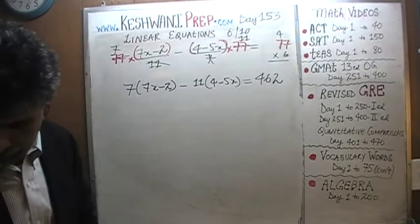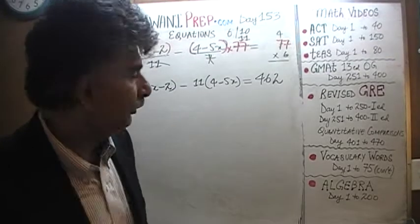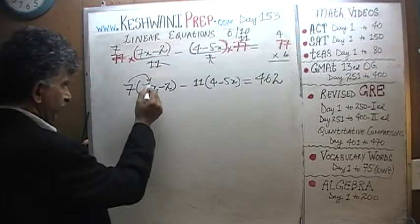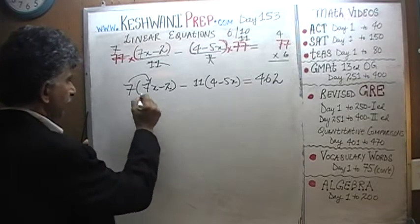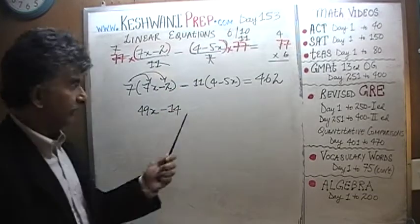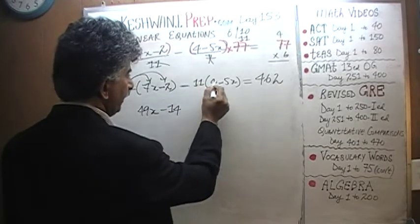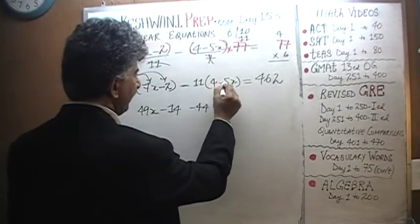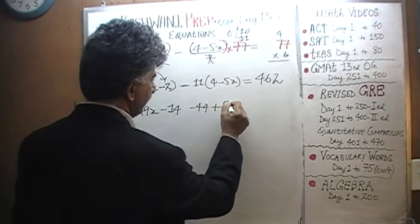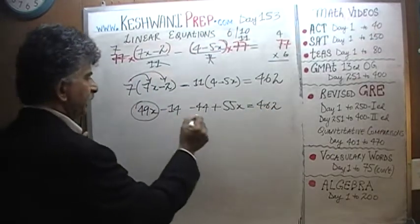I hope and pray to God that I have not made a boo-boo. Let's begin. 7 times 7x is going to be 49x. 7 times negative 2 is going to be negative 14. Don't forget there's a negative sign here also — negative 11 times 4 is going to be negative 44, and negative times negative is going to become positive: 11 times 5x is 55x. Let's combine the like terms.